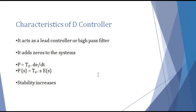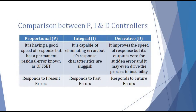Now, since we are done with the characteristics of the D-controller, let us compare the P, I, and D controllers. In case of a P-controller, it has a decent speed of response. But the P-controller had a permanent residual error or offset. To eliminate that, we went to the integral or I-controller. The I-controller is capable of eliminating the error, but the problem with the I-controller was that its response characteristic was very sluggish and slow. So, in order to improve the response characteristics, we went to the derivative controller.